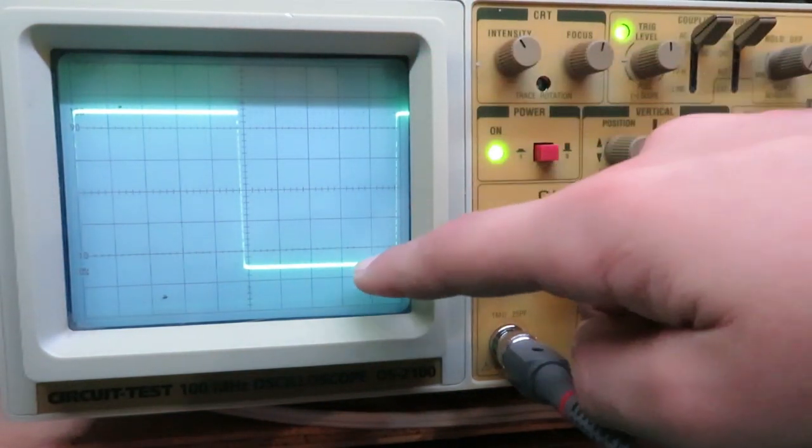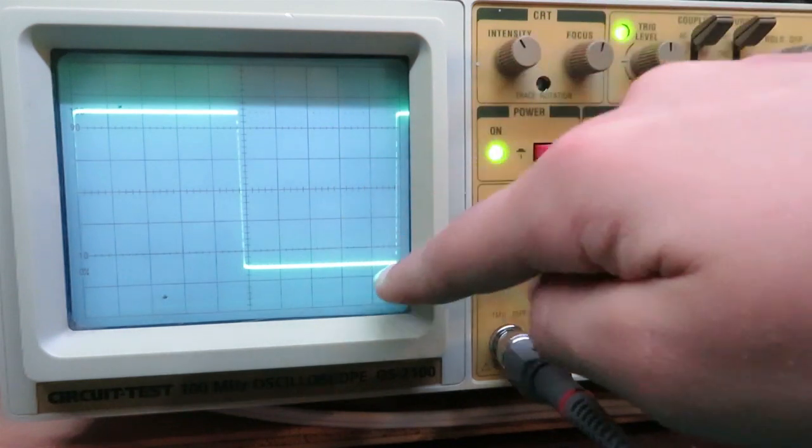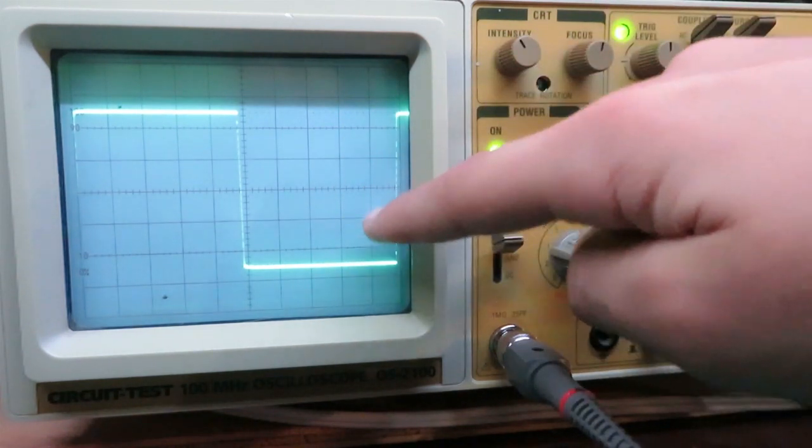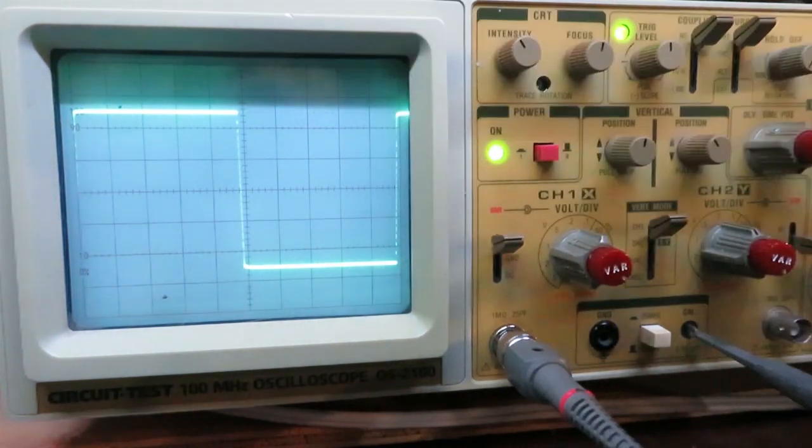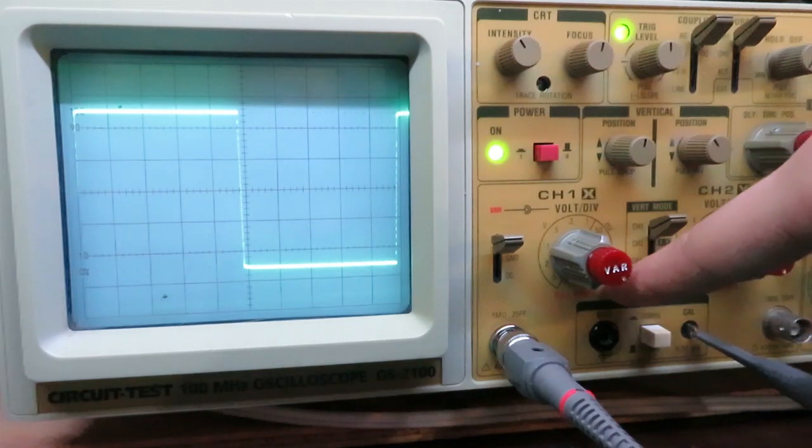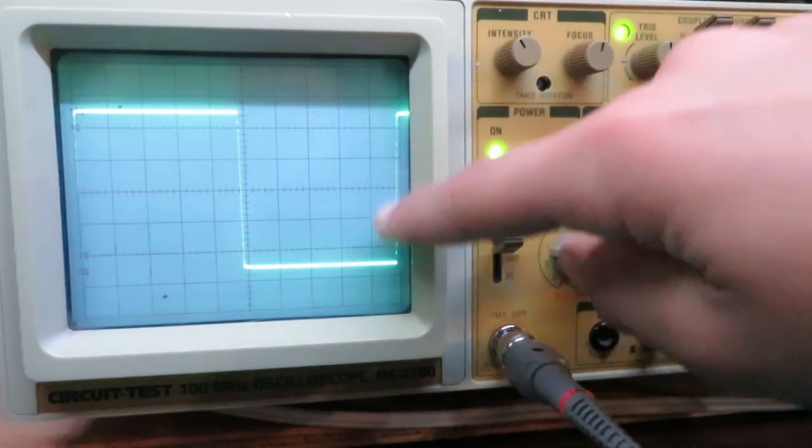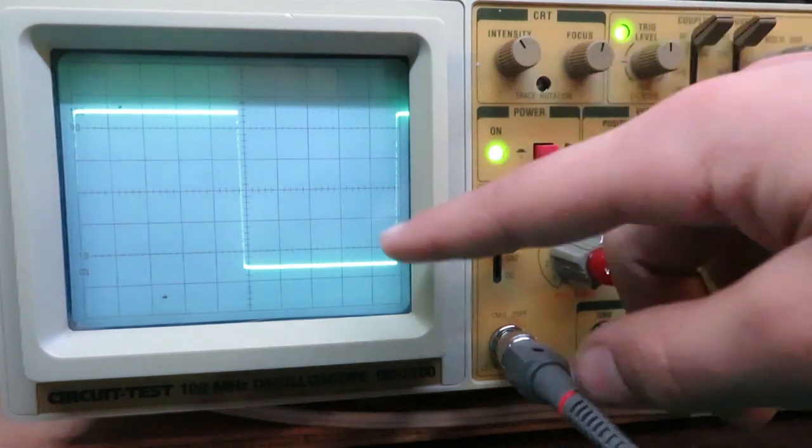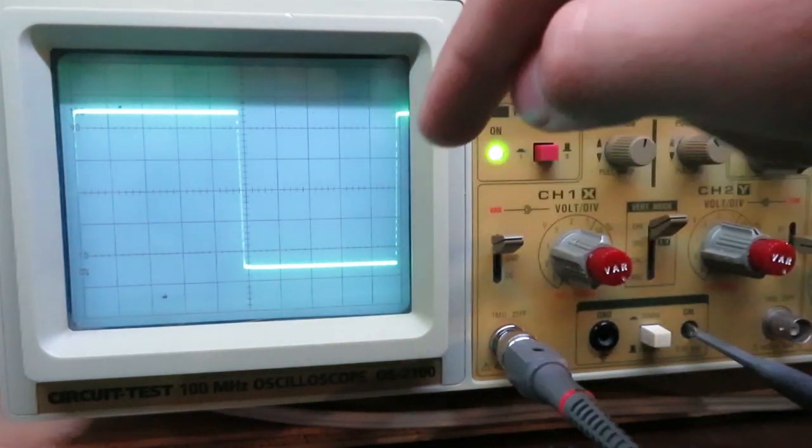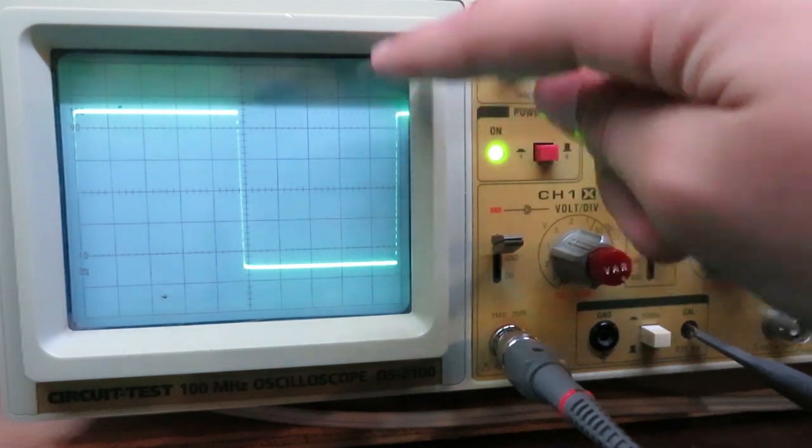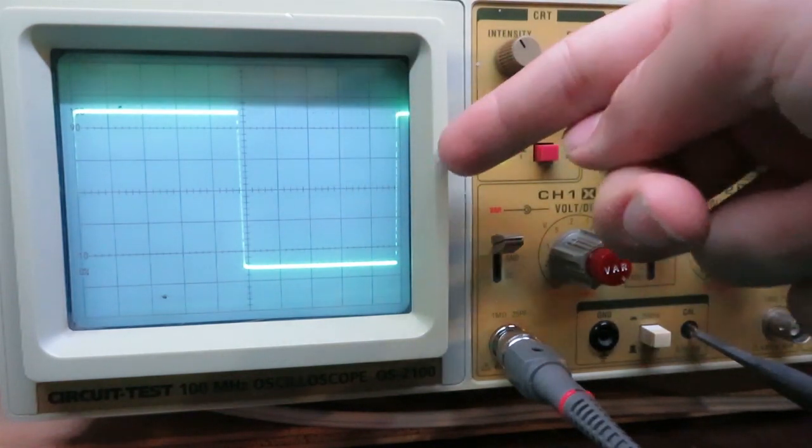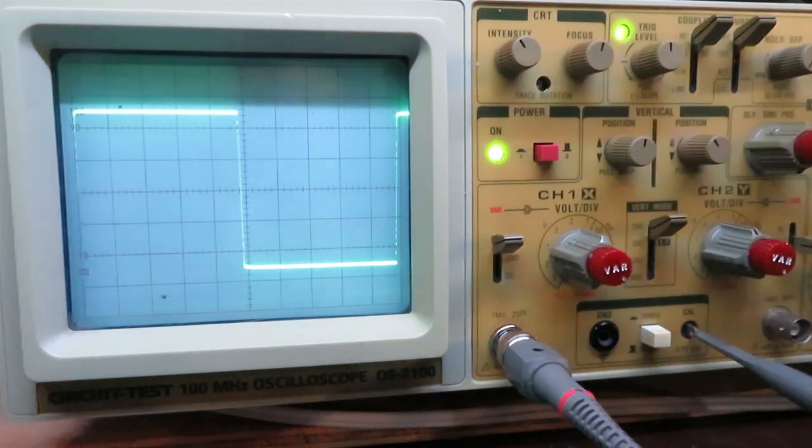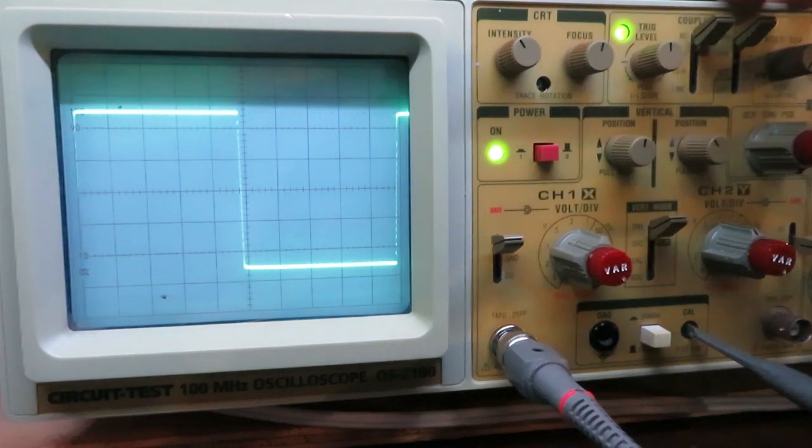So now we can also count the divisions here. So between here and here. So that'd be 1, 2, 3, 4, 5. And this is at the 10 millivolts scale. So that's 50 millivolts. But since we're on the 10x position on our probe, then we multiply that by 10. And that's 500 millivolts or 0.5 volts. Exactly what our calibrate said it would be. That's good.